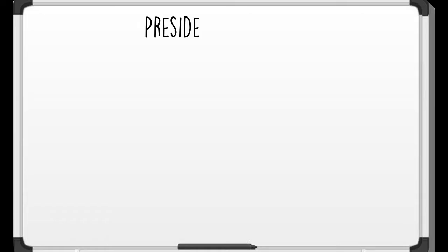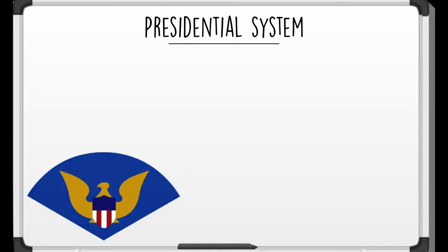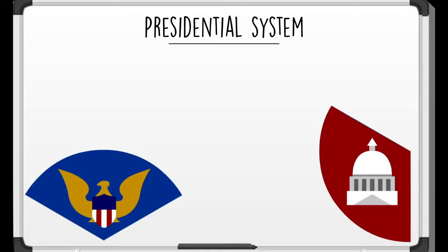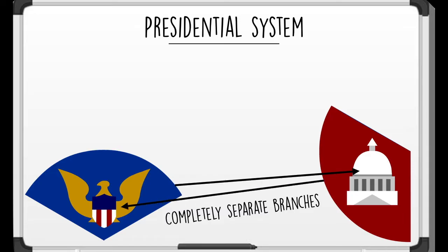Now that that's out of the way and we know what these two branches are, we can look at the presidential system. In this system, the executive branch and the legislative branch are completely separate branches. Someone from the executive branch cannot work in the legislative branch and vice versa — you don't want that happening in a presidential system. We want to keep everybody separate.